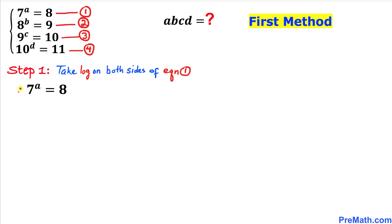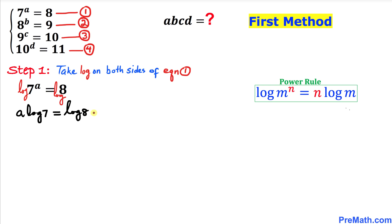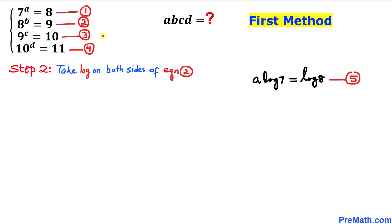Let's go ahead and take a log on both sides of equation one. Applying the power rule, we can bring this exponent to the front. So therefore we can write this as: a times log of seven equals to log of eight. Let me call this equation number five.